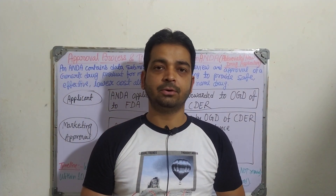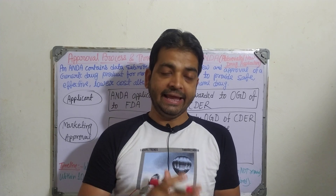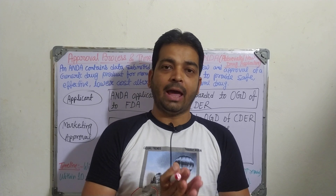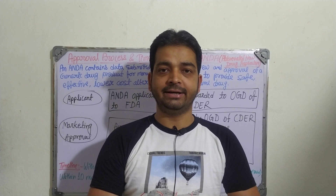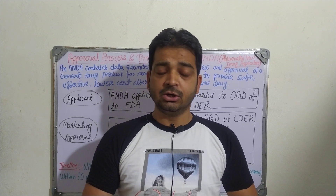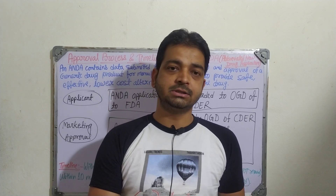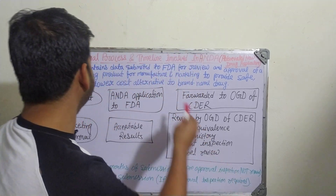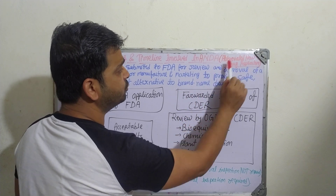Hello students. Now we are going to discuss the approval process and timeline required for ANDA, abbreviated new drug application. Abbreviated new drug means generic drug products, which is not the branded drug, which we have discussed already in unit one — what is the branded drug, what is the generic drug. For this also, FDA approval is required. So what is the process and how much time is required? Let's discuss. The topic is approval process and timeline involved in ANDA, abbreviated new drug application.